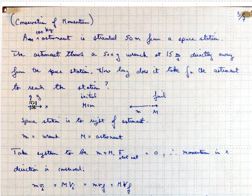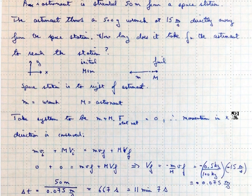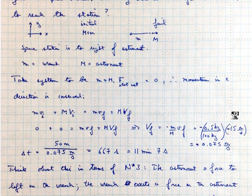So the scenario is that initially we have big M plus little M. Big M represents the astronaut, little M represents the wrench. But finally, we have the wrench going directly away from the space station, and big M going towards the space station. So the space station would be off to the right in this scenario. And so what we're going to do is we're going to take the system to be little M plus big M. That is the wrench and the astronaut.